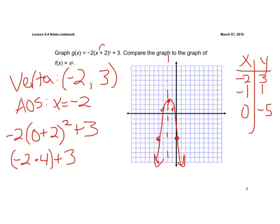This plus 2 right here moves it to the left 2. This plus 3 shifts it vertically up 3. And we have our graph. This negative reflects it. The 2 is a vertical stretch because it's bigger than 1. And we have our translated parabola.